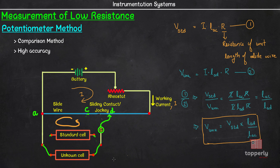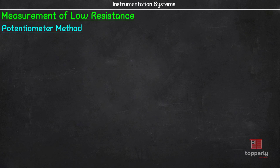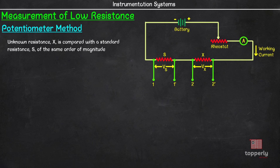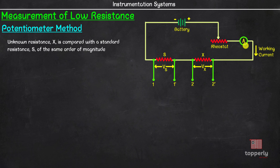Now let us see how to use the potentiometer to measure low resistances. For that, we use a standard resistance which is of the same order of magnitude as our low resistance, and compare it with the low resistance. The basic connection diagram has a standard resistance S in series with the unknown low resistance X, connected to a battery through a rheostat and ammeter.